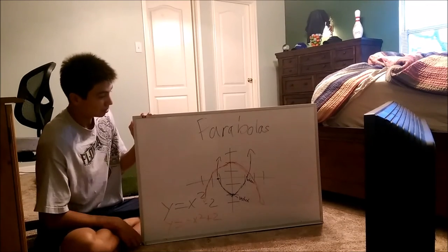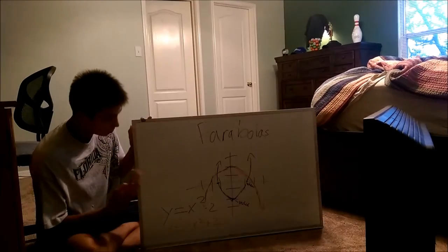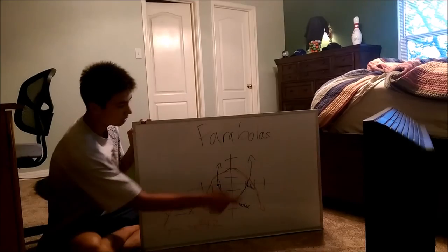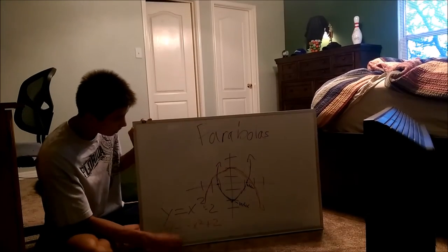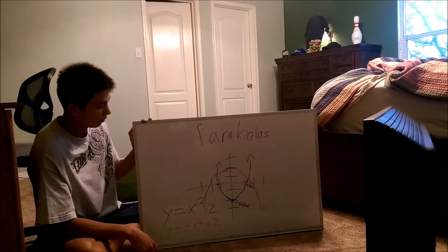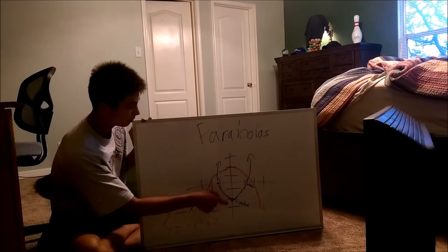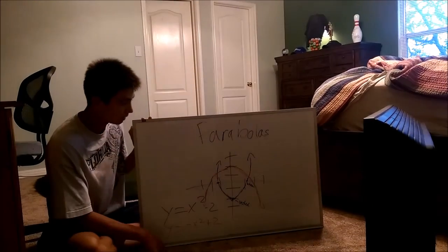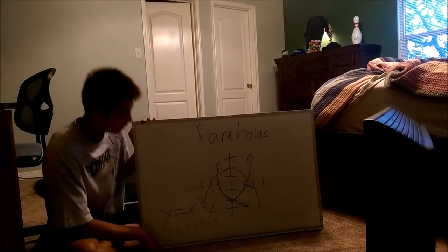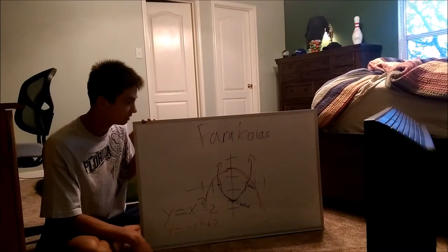Now we're going to talk about parabolas. As you can see here, we have two different parabolas — the positive one that opens up, and the negative parabola that opens down. The vertexes are the uppermost or lowermost points, depending on if it's positive or negative. And the solutions are where it crosses the x-axis.